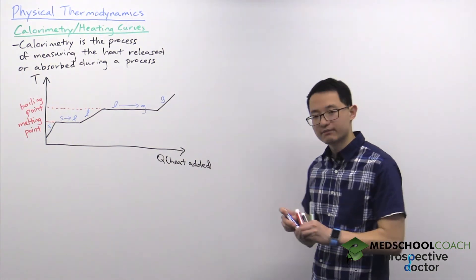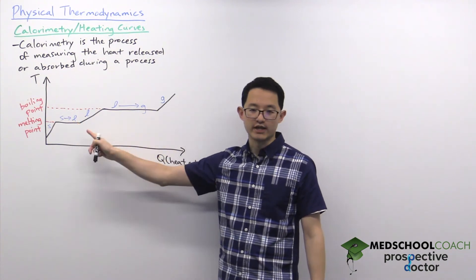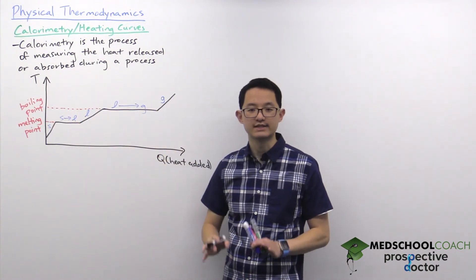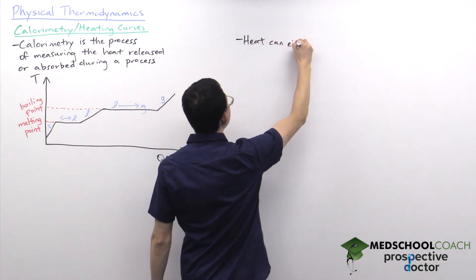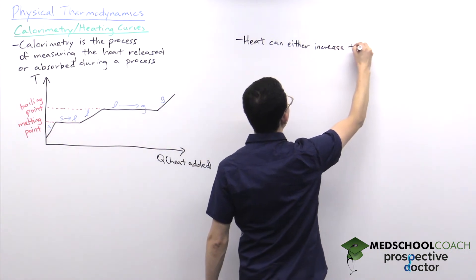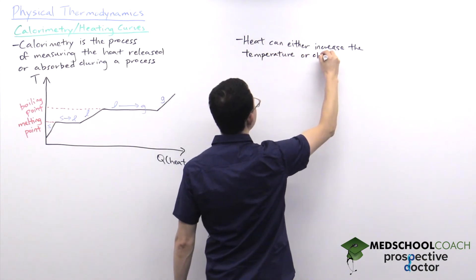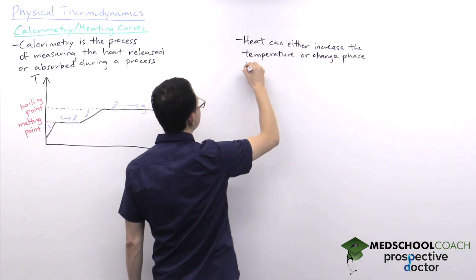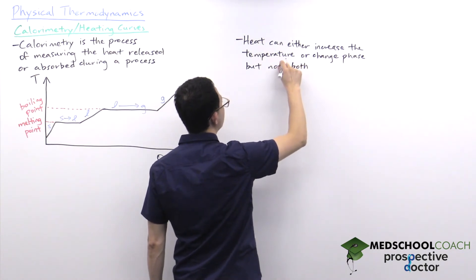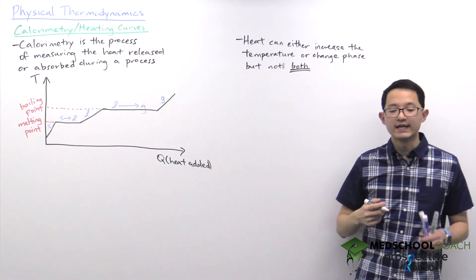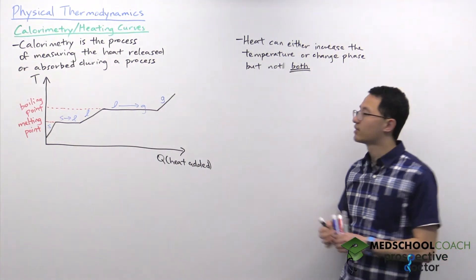When you look at this graph, there's something very important to notice: when you add heat, the temperature either increases or there is a phase change, but you cannot have both processes happening simultaneously. Heat can either increase the temperature or change phase, but not both.